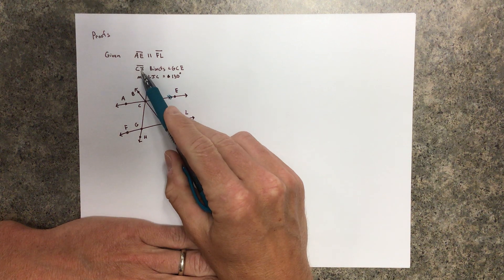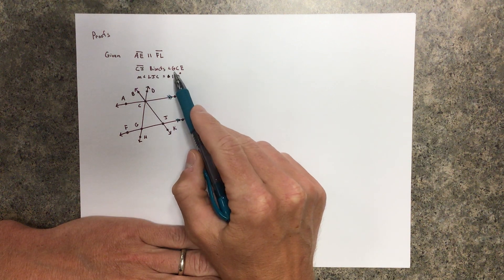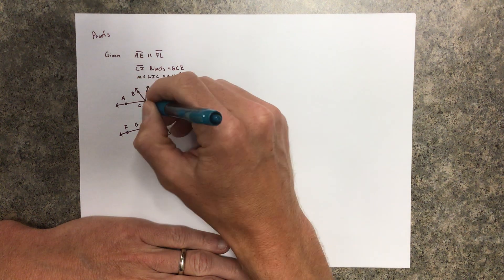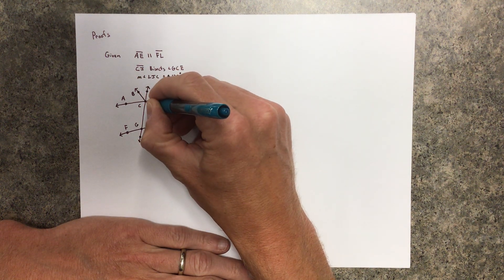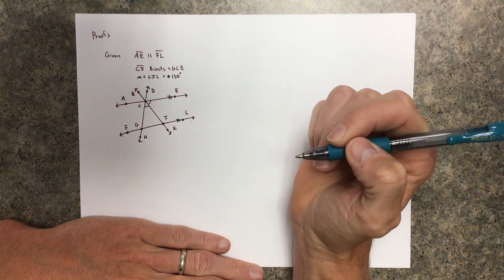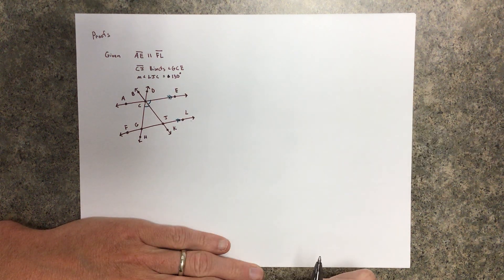CJ bisects angle GCE. The definition of bisects means that angle and that angle are actually the same, right. To bisect is to cut an angle in half.